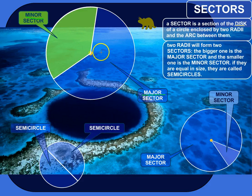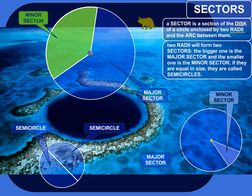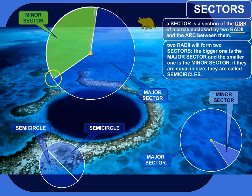And it's enclosed or bounded by two radii. Radii is the plural of radius, and the radius of a circle is the distance from the center to a point on the circle. So here we've got a radius and a radius — hence, we have two radii.